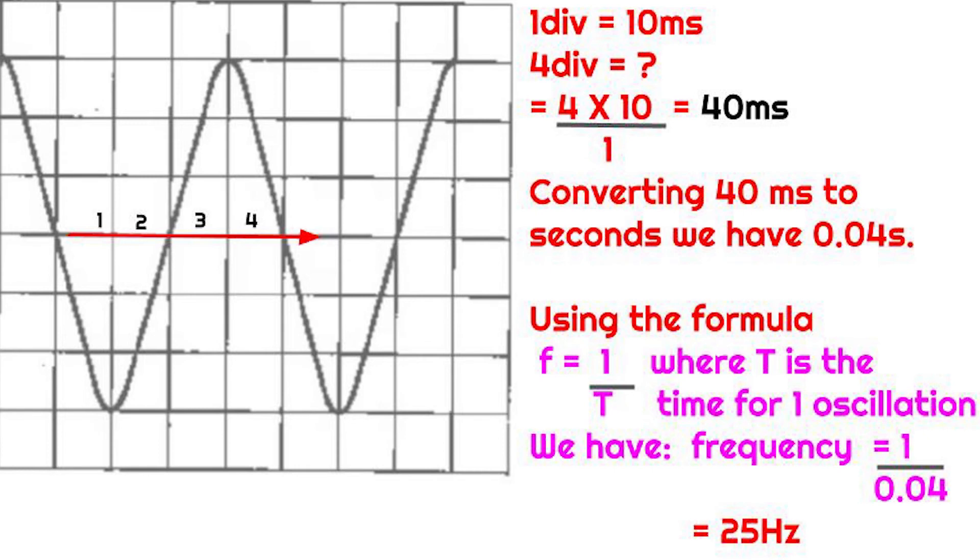Converting 40 milliseconds to seconds, you're going to have 0.04 seconds. Then using the formula frequency is equal to the reciprocal of the period, you're going to have frequency being equal to the reciprocal of 0.04 and that's going to give us 25 hertz as the frequency of the AC signal.